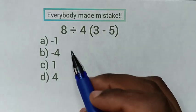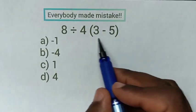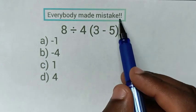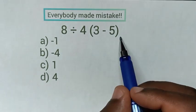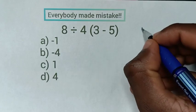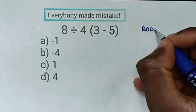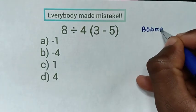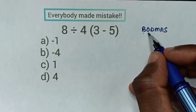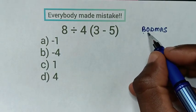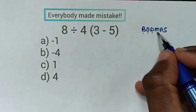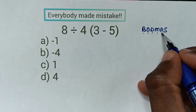Hello. How to solve this math problem which almost everybody made a mistake. From this problem we will apply the BODMAS rule, where B is bracket, O is order or exponent, D is division, M is multiplication, A is addition, and S is subtraction.